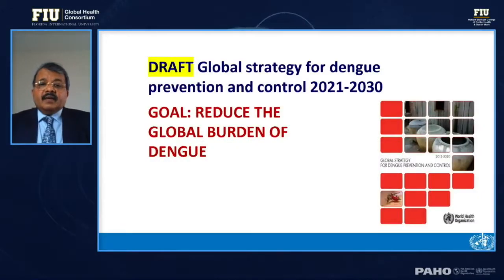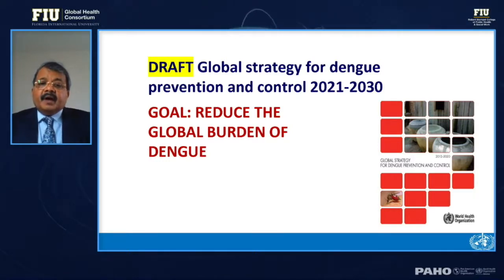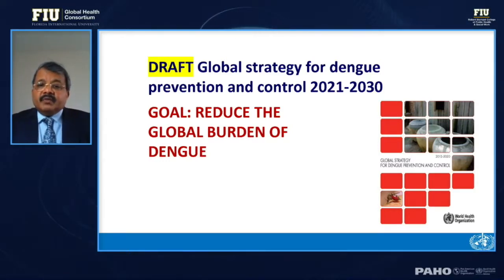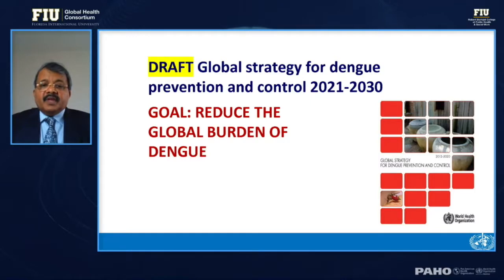In line with the revised NTD roadmap going to the World Health Assembly this November, WHO has drafted a global strategy for dengue prevention and control. The previous strategy ends in 2020, so the new strategy — shown here as a skeleton — maintains the same overall goal: to reduce the global burden of dengue.